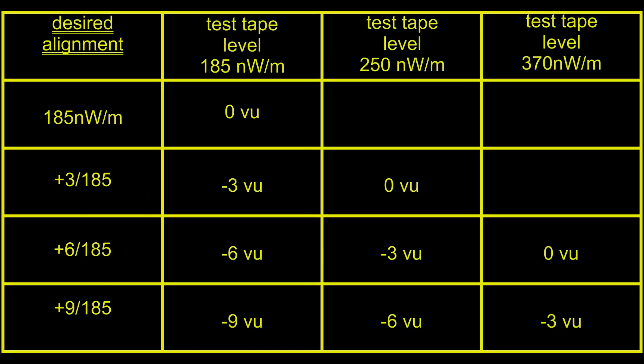If you have a semi-professional machine, like a 16-track 1-inch, you need to check the specifications of your machine to determine the proper test tape. This chart shows you how to set your playback level depending on what test tape you have and what alignment you want.